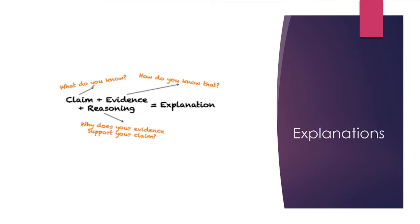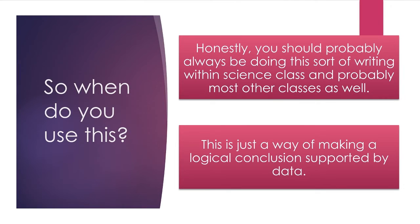If you add claim and evidence and reasoning, you create an explanation for something. You can think of the claim as what you know, the evidence is how you know it, and the reasoning is why does this evidence support the claim. When you've done that, you have a complete explanation. You're going to be using this all year, and chances are you're not just going to use it in science class — you'll be using it in your other classes as well. Any time that you're trying to write an argumentative essay or explain a situation to someone, this is the sort of process you want to go through. It's really just making a logical conclusion that's supported by data.